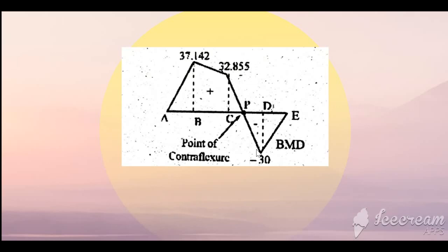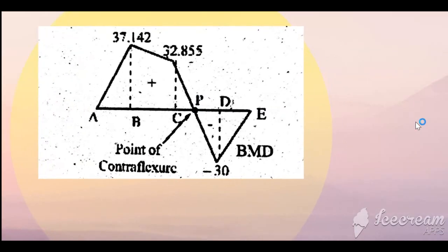The bending moment at point C is 32.855 and at point D is minus 30. To go from plus 32.85 to minus 30, you have to cross the zero line — transferring from positive to negative sign. The point at which the bending moment is zero is known as the Point of Contra Flexure, and its distance from end E or end A can be calculated using the bending moment diagram.